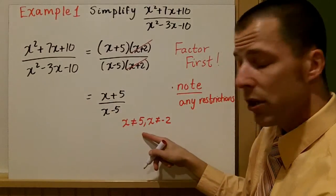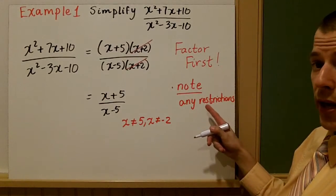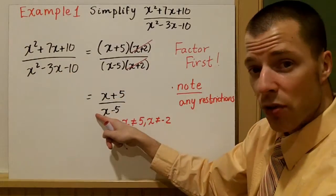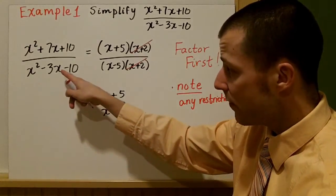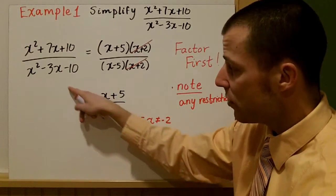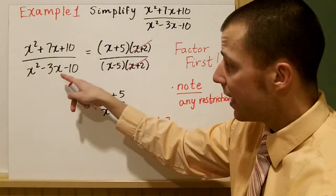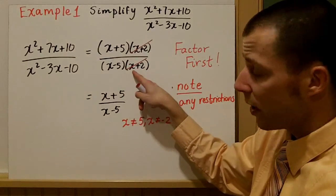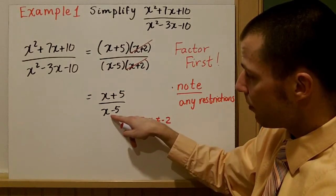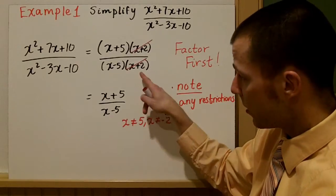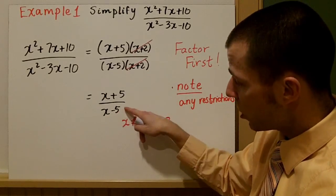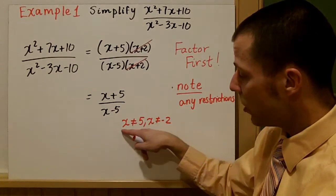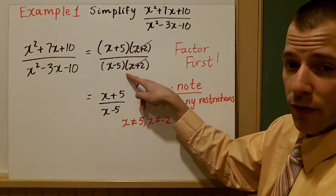Now, the big thing you have to notice here is that you have to note any restrictions. In order for the simplified form to equal the original, you have to keep the same domain restrictions — otherwise you can't say these two functions are equivalent. They have to have the same domain restrictions. So even though I see 5 and negative 2 won't work in the simplified form, I've removed the minus 2 factor. So x can't equal 5, x can't equal negative 2. You still have to note all your restrictions back from the original factored form.